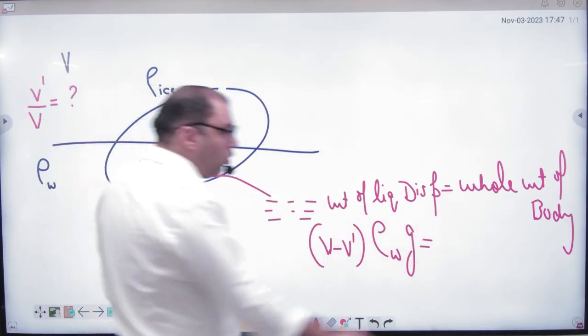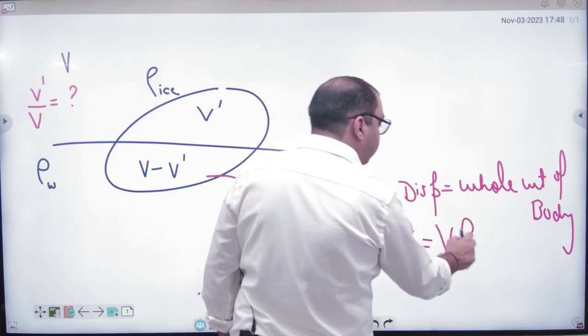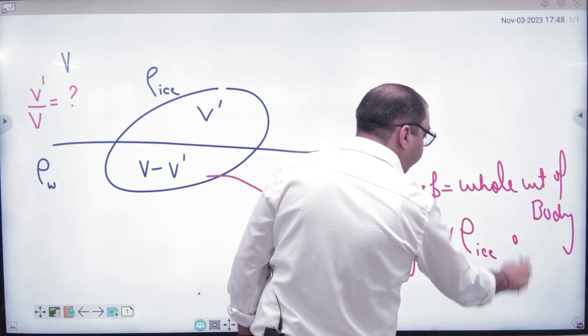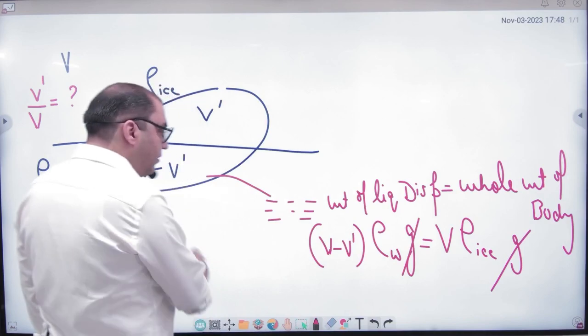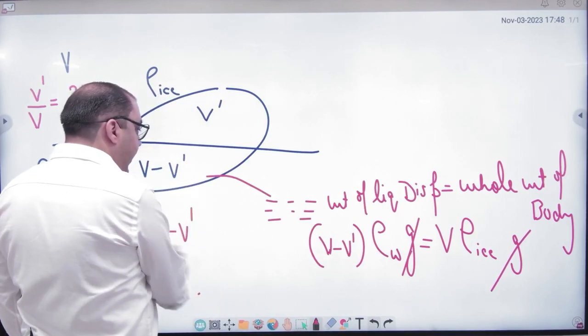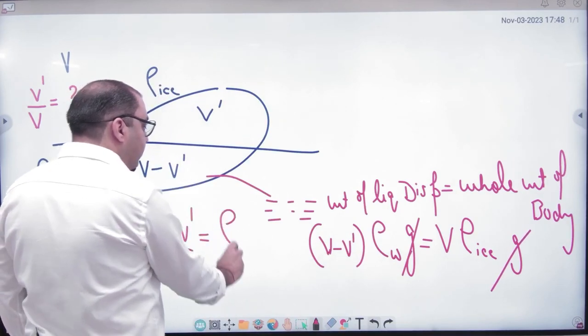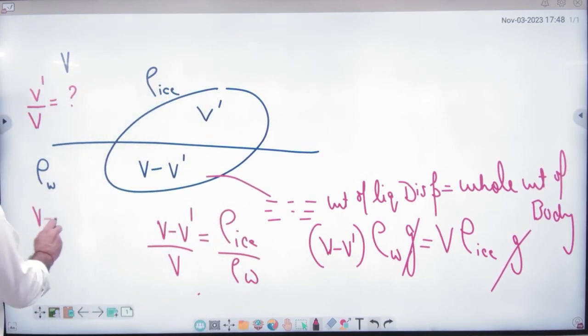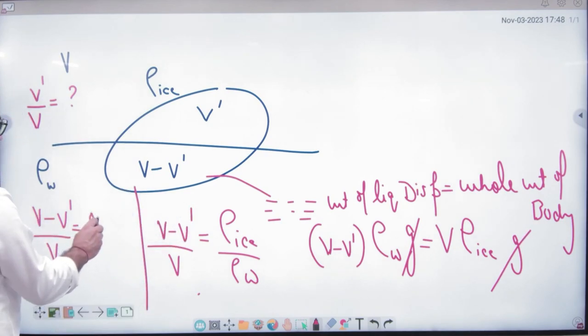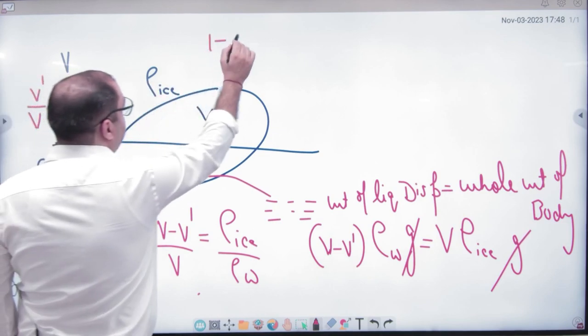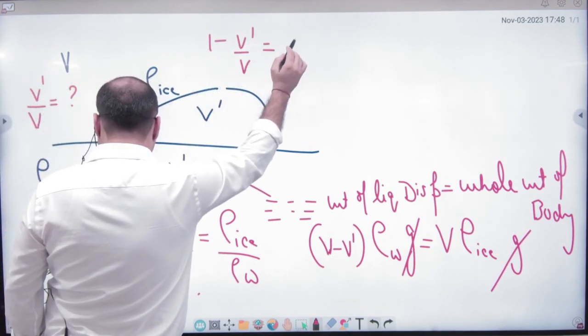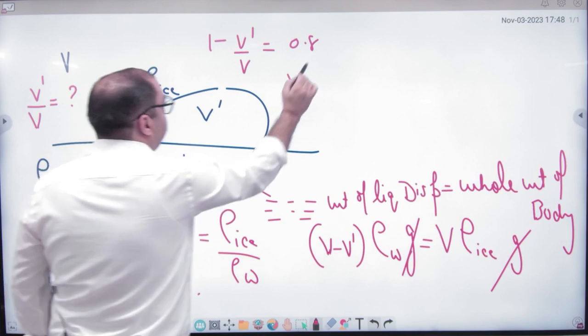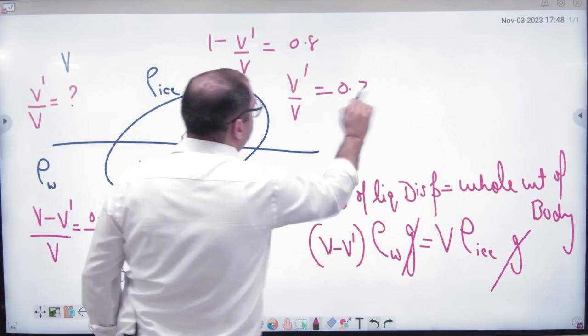Whole weight volume V, density of ice into G, G from G cancel, V minus V' by V, density of ice divided by density of water, or V minus V' by V, density of ice is 0.8, or V' by V ratio is 0.8, or V' by V ratio is 0.2 the answer.